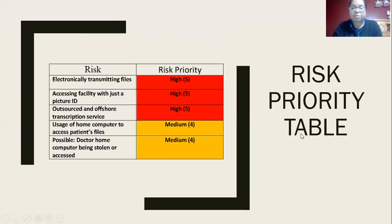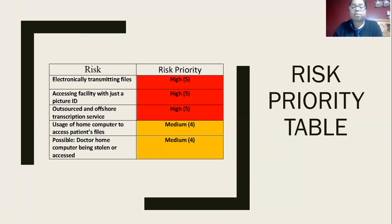This is my risk priority table that I made, and it has the risks I found for the scenario. The risks include electronically transmitting files, which means the files could be lost during transmission. The doctor had easy access — accessing the facility with just a picture ID was a risk that I found. Outsource and offshore transcription services was also a risk.